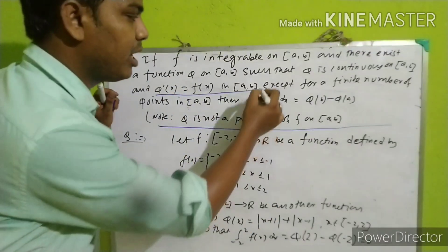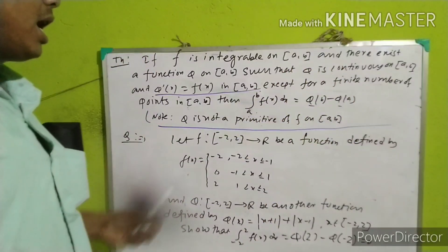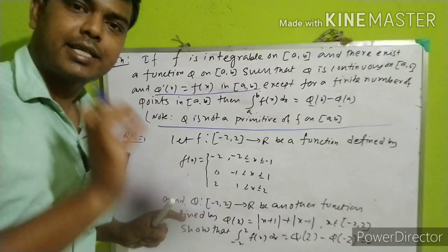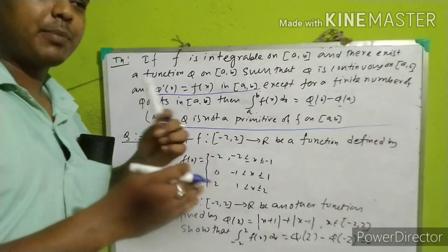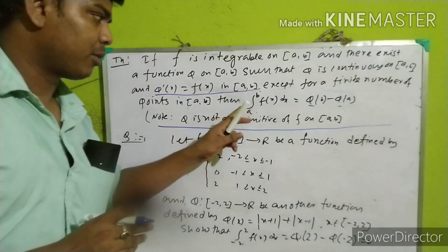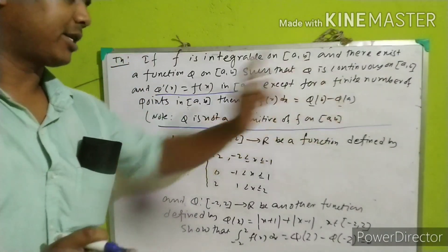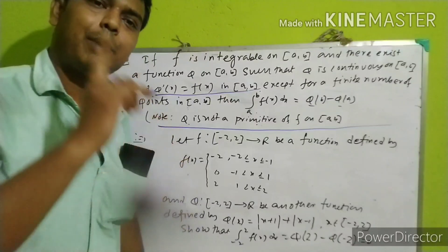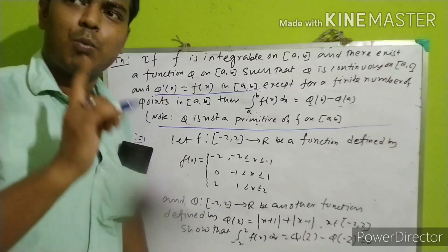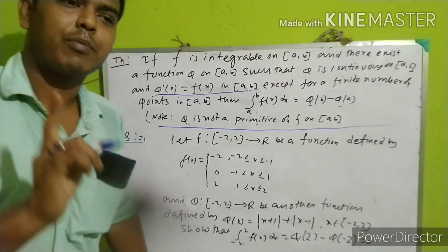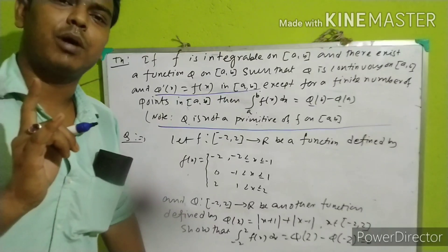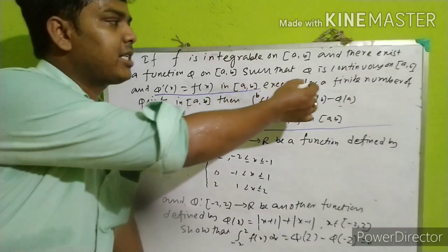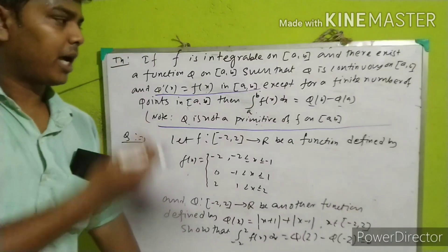Integration from a to b of f of x dx equals phi of b minus phi of a. We say that phi is an integral function and phi is a continuous function, where phi dash x equals f of x except for a finite number of points in the closed interval [a, b]. Note that phi is not a primitive function when phi dash x equals f of x for all x in [a, b]. If phi dash x equals f of x except for a finite number of points, then phi can serve as a primitive function in this context.